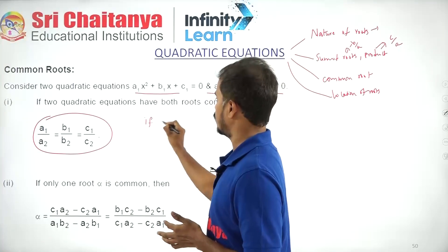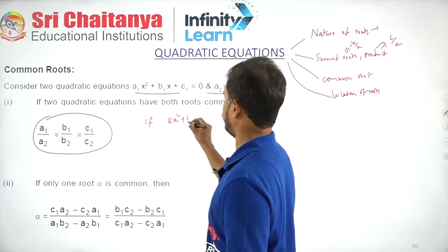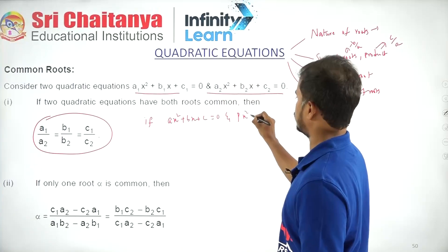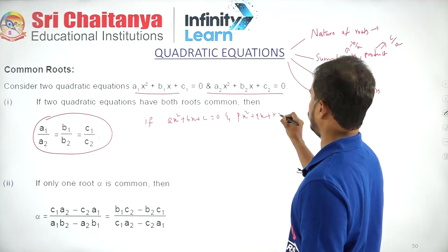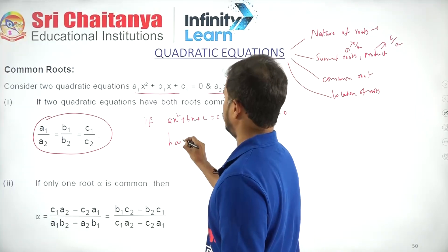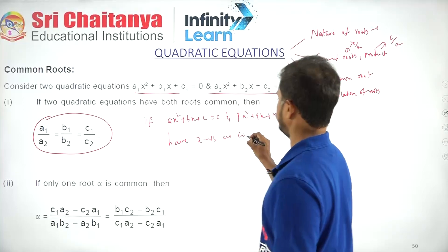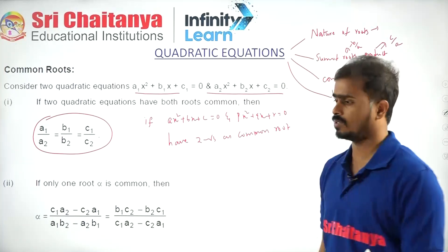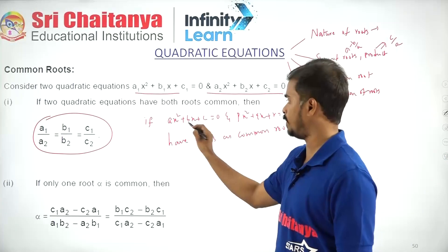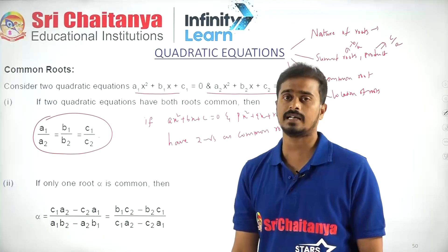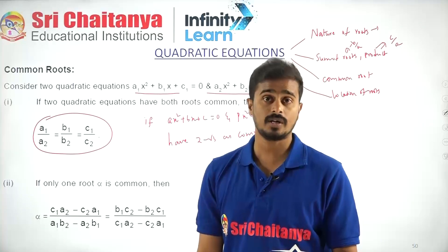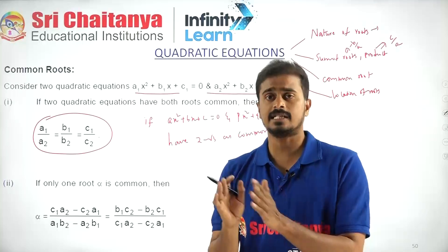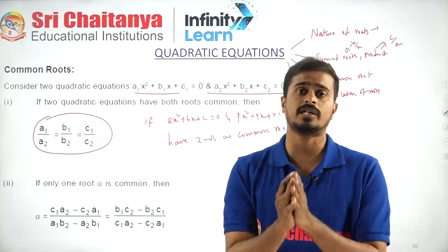If Ax² + Bx + C = 0 and Px² + Qx + R = 0 have 2 − √3 as a common root, and it is given that A, B, C and P, Q, R are rational numbers, then these two equations with rational coefficients have 2 − √3 as the common root.